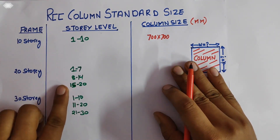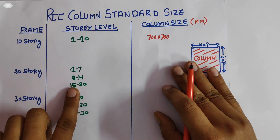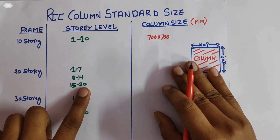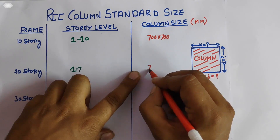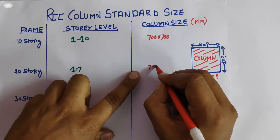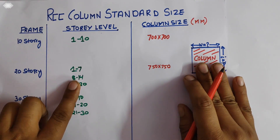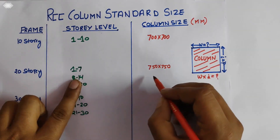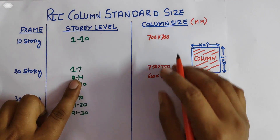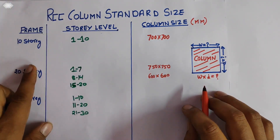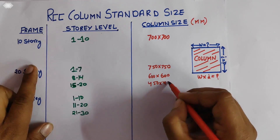For the 20-story building, we have three subcategories: story levels 1 to 7, then 8 to 14, then 15 to 20. For 1 to 7 story level, we take column size generally as 750 by 750 mm. For the second subcategory, 8 to 14, you can see that as we go to upper stories the size of the column is reduced. For 15 to 20, the column size is 450 by 450 mm.